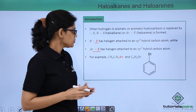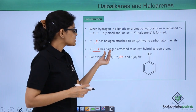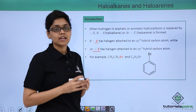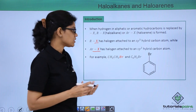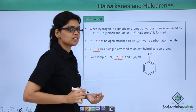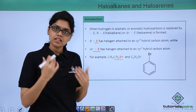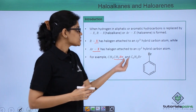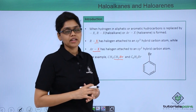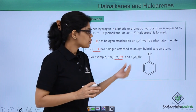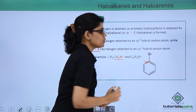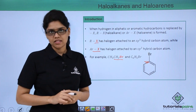Let us take an example here. We have CH3CH2Br, or ethyl bromide, and as you can see the carbon bearing the bromine atom has SP3 hybridization. While C6H5Br, or phenyl bromide, has the bromine atom attached to a carbon having SP2 hybridization state.